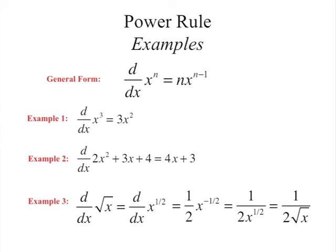In example 3, if you were asked to differentiate root x, you rewrite it as x to the 1 half. Bring that exponent down to get 1 half, and x raised to 1 half minus 1 is negative 1 half. You can rewrite that as 1 over 2 root x, since a negative exponent moves to the denominator.